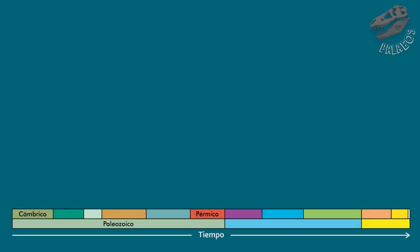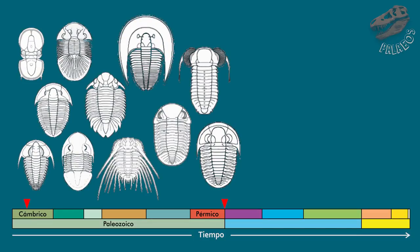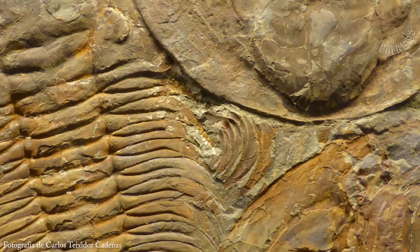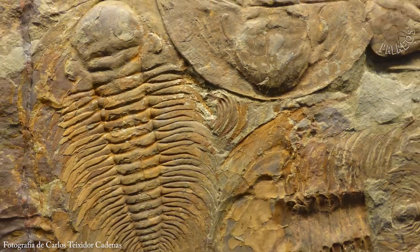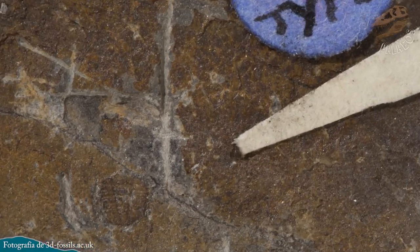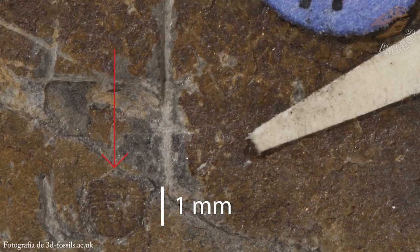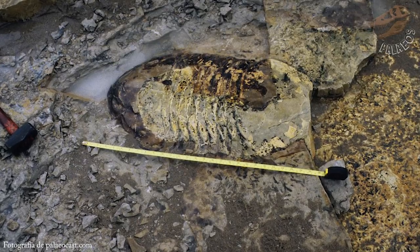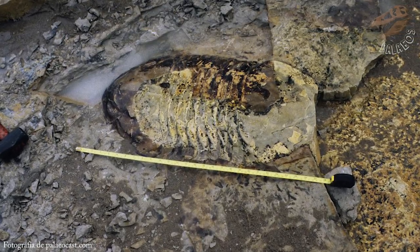El registro fósil de los trilobites va del cámbrico temprano al pérmico tardío, de los 521 a los 252 millones de años. Esto es 269 millones de años, casi el doble de tiempo que vivieron los dinosaurios no avianos, lo que los coloca como uno de los grupos biológicos más exitosos que hayan existido. En todo este tiempo, los trilobites tuvieron una gran diversidad de tallas y formas. El más pequeño registrado es Acantopleurella stipule, con adultos de apenas 1.5 milímetros, mientras que el más grande es Isotelus rex, de 72 centímetros.